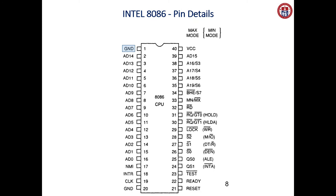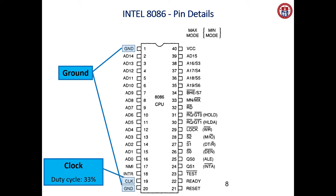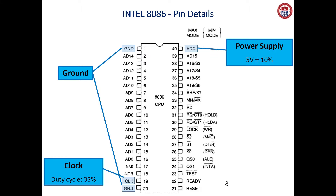Pin number 1 and pin number 20 are ground signals. Pin number 19 is used to provide timing to the processor — that is the clock signal. It is used to provide timing signals to the microprocessor. Pin number 40 is the power supply signal, which is 5 volts.